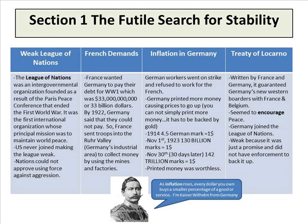Looking at Section 1, the feudal search for stability, there are four sections: the weak League of Nations — which at the end of World War I tried to keep everybody from getting into another world war — the French demands, inflation in Germany, and the Treaty of Locarno. The League of Nations was the intergovernmental organization founded as a result of the Paris Peace Conference that ended the First World War, and the first international organization whose principal mission was to maintain world peace.